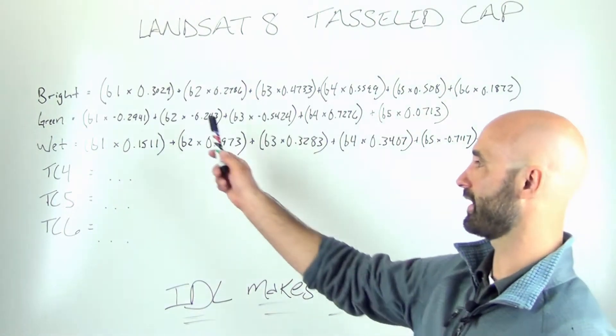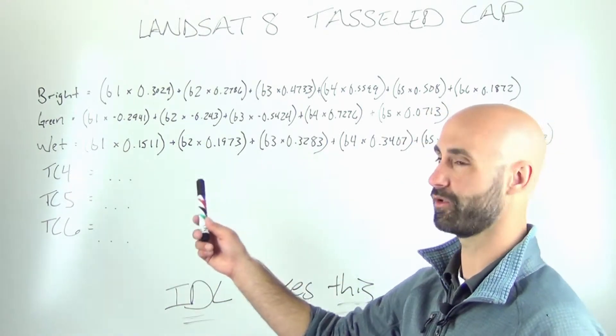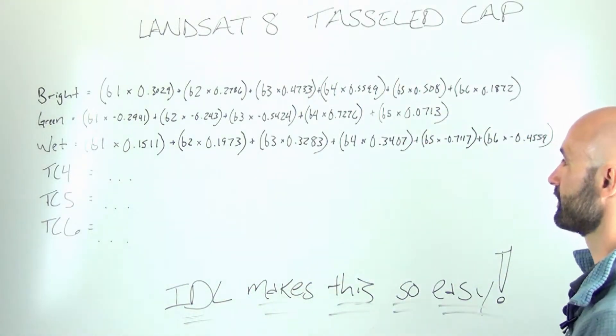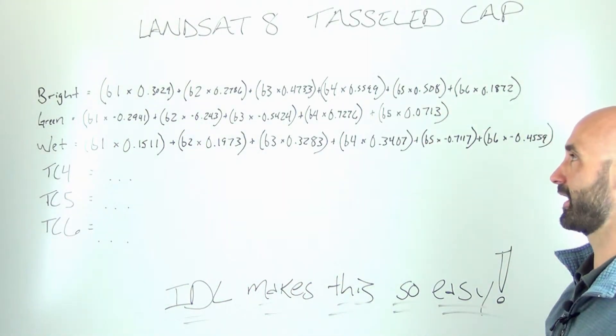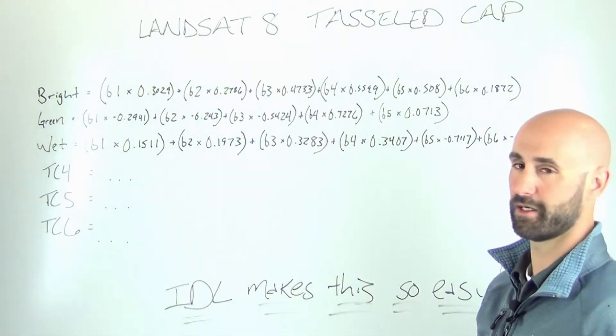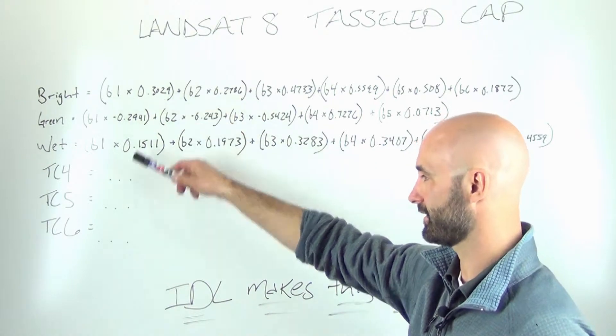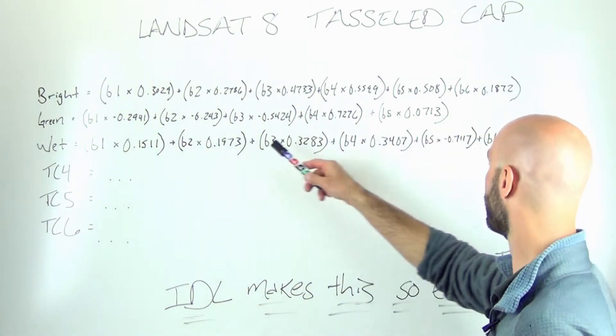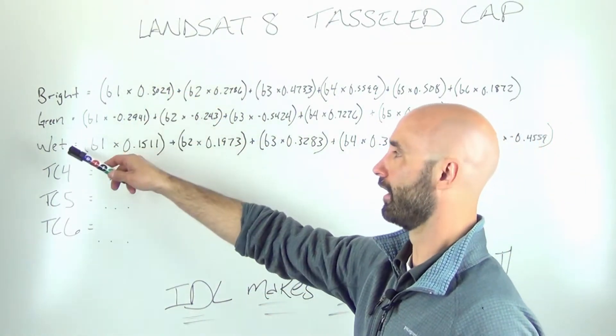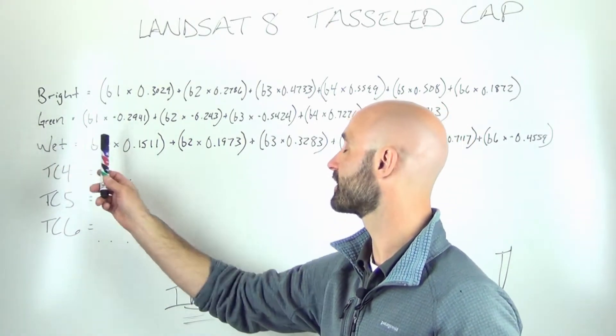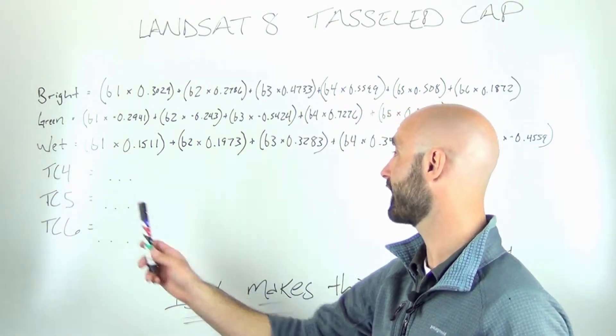What I've done here is just written out a brief example of what this algorithm does. It takes the multispectral bands from a Landsat 8 sensor and it applies various offset values. It calculates six different bands here. I wrote out the algorithm for the first three: the brightness band, the greenness band, and the wetness band.